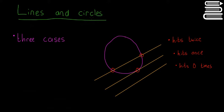Welcome back. We're going to talk about lines and circles. Given a circle and a line, there are three different cases: the line hits the circle twice, shown by two red dots, or the line hits the circle once — meaning the line is tangent to the circle — or the line misses the circle entirely and hits it zero times.